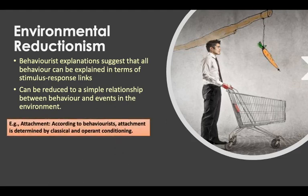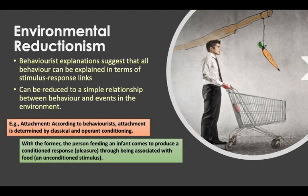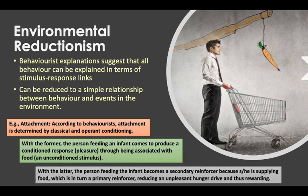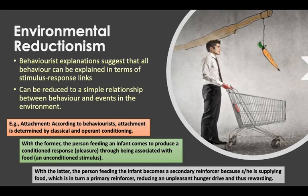Looking at attachment as an example: according to behaviorists, attachment is determined by classical and operant conditioning. With classical conditioning, the person feeding the infant comes to produce a conditioned response — pleasure — through being associated with food, the unconditioned stimulus. With operant conditioning, the person feeding the infant becomes a secondary reinforcer because they supply food, which is a primary reinforcer, reducing an unpleasant hunger drive and thus rewarding.